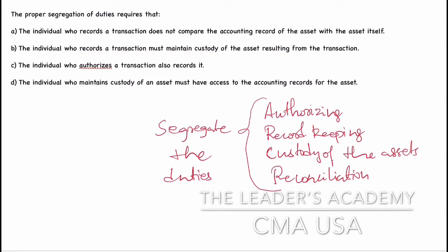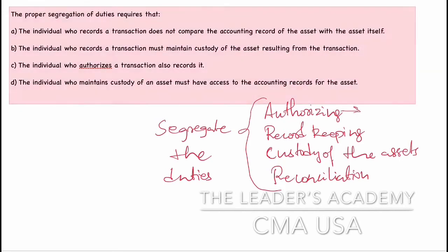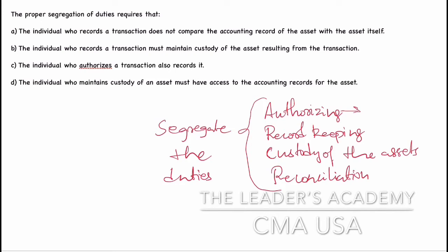Authorizing means someone who will be approving the transaction — for example, a signature. Record keeping means just journal entries. Custody of the asset means the person who will be having all the cash, bank details, or any kind of assets. Reconciliation means comparing them — comparing the records with the assets or comparing the checks with the actual transactions. These four things should be separated, meaning segregated. Then the segregation of duties will be perfect.